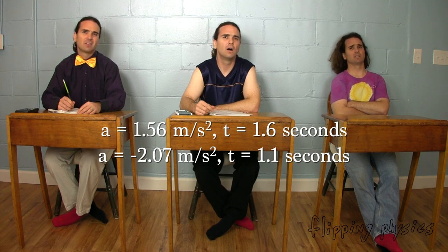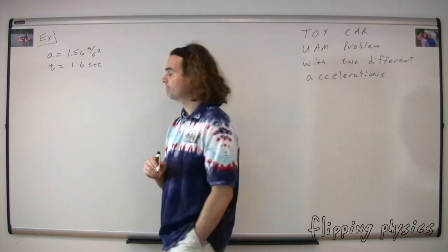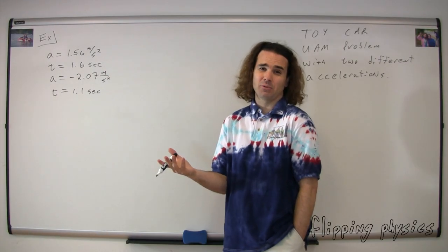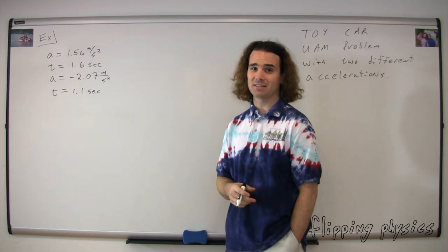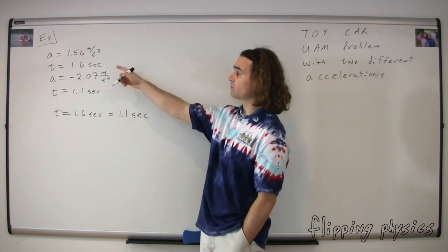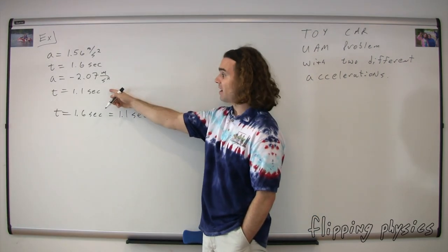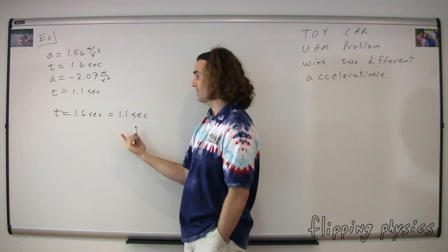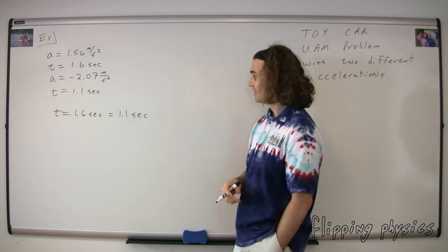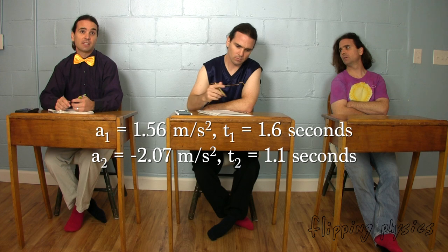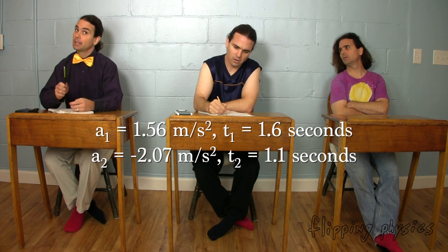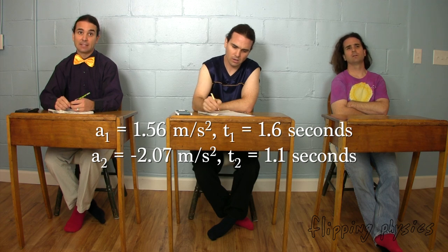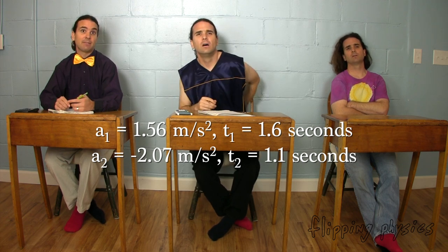Mr. P.: That doesn't look good. No, it doesn't. We can't have the same variable equal to two different numbers — that just doesn't make any sense. For example, if time equals 1.6 seconds and time equals 1.1 seconds, then 1.6 seconds equals 1.1 seconds, which doesn't make any sense. So what are we going to do about this? I think we need to split the problem into two parts. Yeah. So 1.56 meters per second squared is the acceleration for the first part and negative 2.07 meters per second squared is the acceleration for the second part. Likewise, the 1.6 seconds is the time for the first part and the 1.1 seconds is the time for the second part.